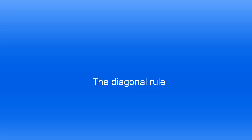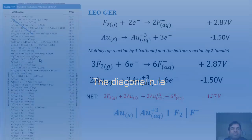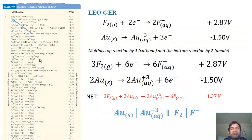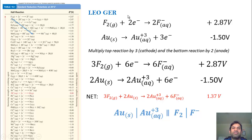In this video, we will learn about the diagonal rule and an important rule that can be exploited utilizing the standard reduction potential table. First of all, you need to remember LEO-GER. LEO: lose electrons, oxidation. GER: gain electrons, reduction.